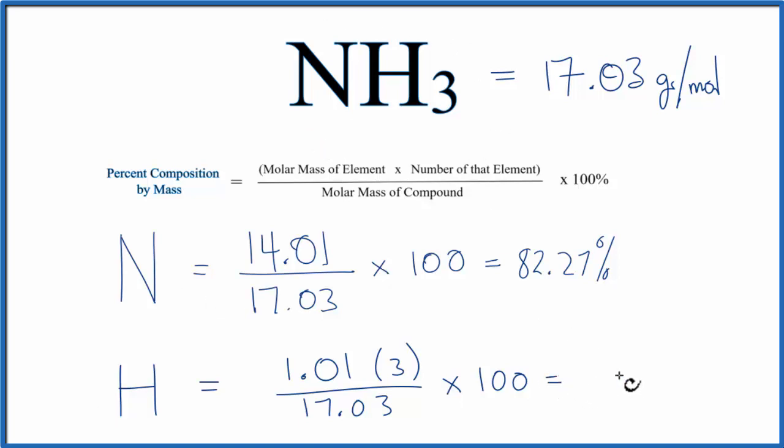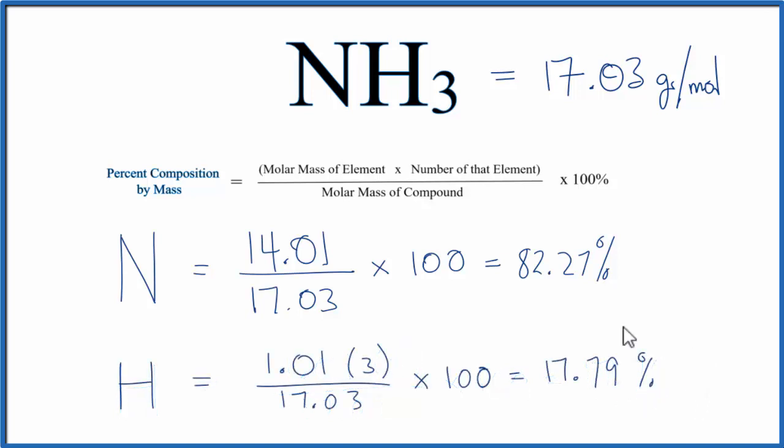Note that because my periodic table only rounded to two digits after the decimal place, these might be a little bit off here but not much. And that makes this the percent composition by mass for each of the elements here in NH3 ammonia.